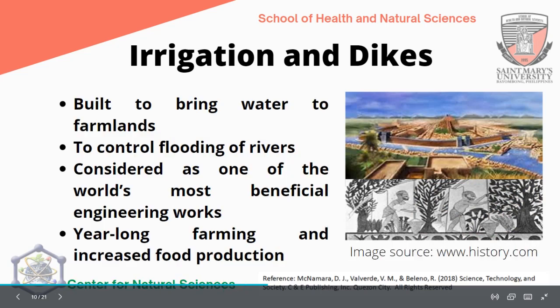Irrigation and dikes were built to bring water to farmlands and to control flooding of rivers. They are considered one of the world's most beneficial engineering works. Even today, irrigation and dikes are very important in agriculture and farming — they supply water, prevent flooding, and increase food production. With this, they did not need to wait for the rainy season, as they already had a good supply of water for their farmlands, enabling year-long farming and beautiful food production.